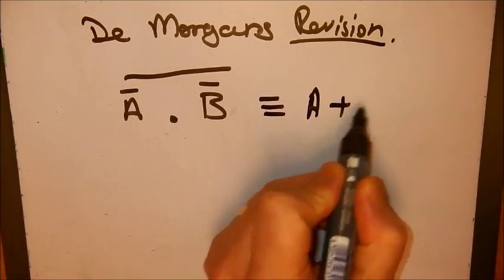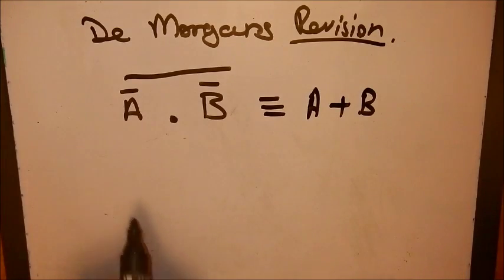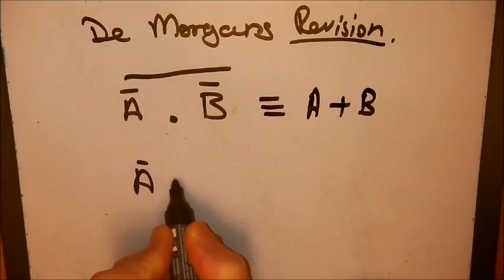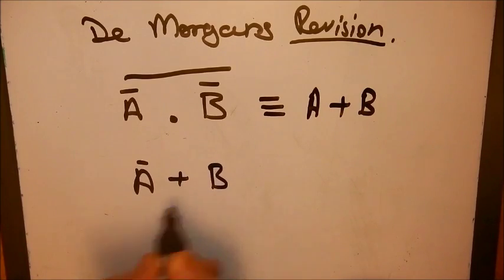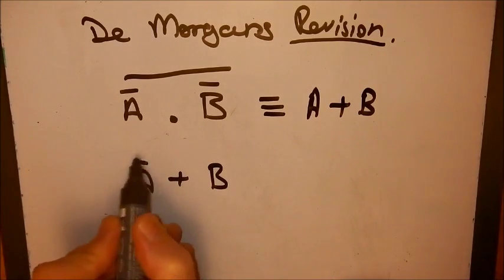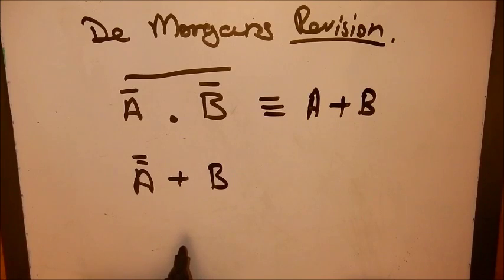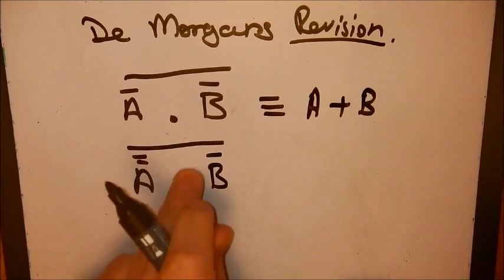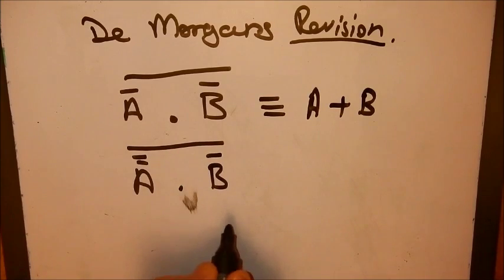But essentially we change the sign and we NOT the individual terms and we NOT the lot. And those two things are the equivalent. It doesn't really matter what the expression is. We can do the same thing. So follow the same three rules again. We can NOT the individual terms, NOT the lot and change the sign and those would be the equivalent to each other.